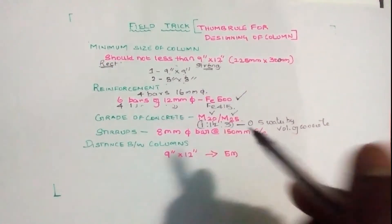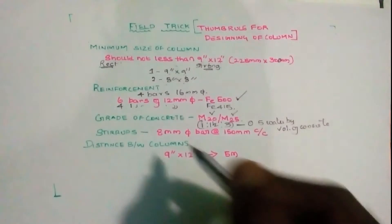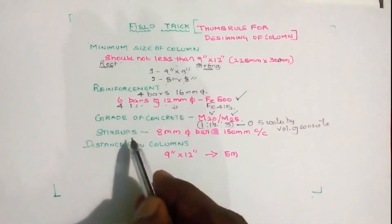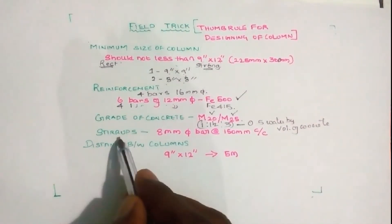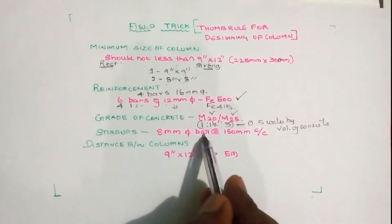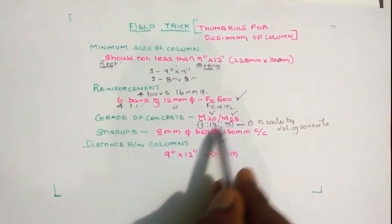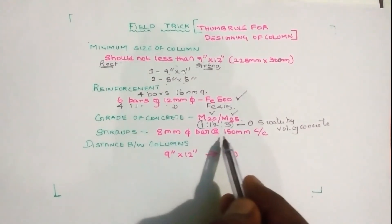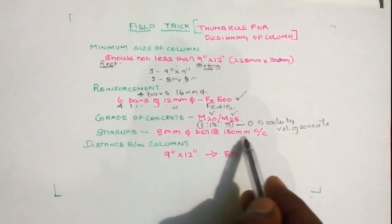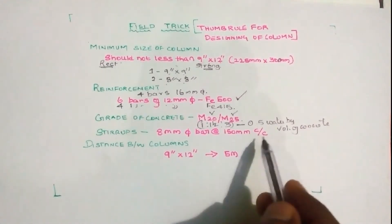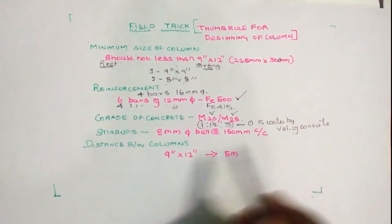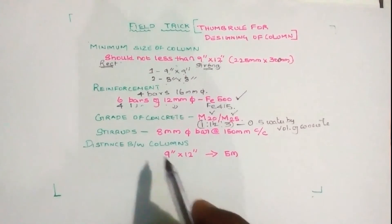Next is the ties or stirrups. We use 8 mm diameter bars for the ties, spaced at a center-to-center distance of 150 mm.